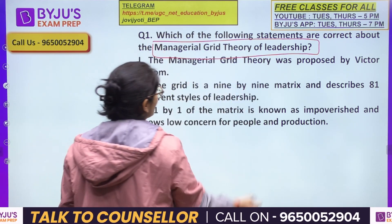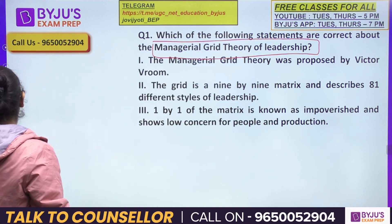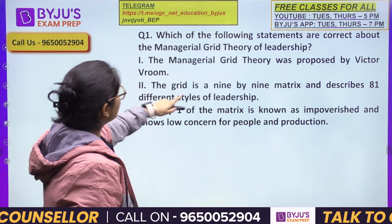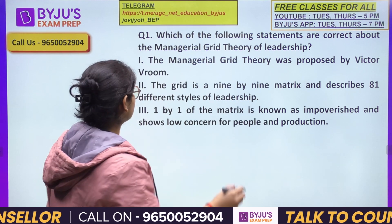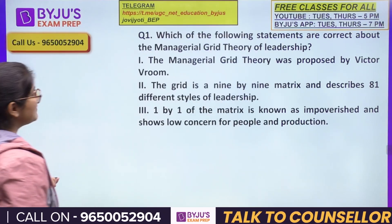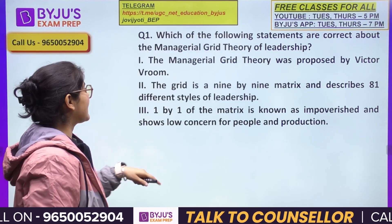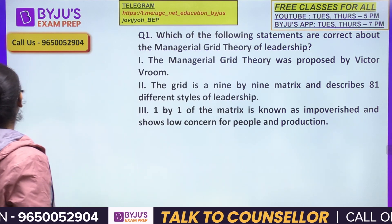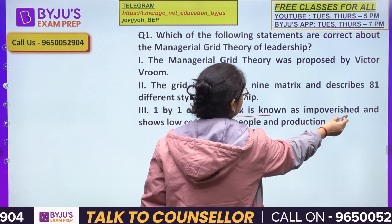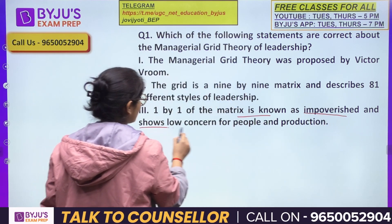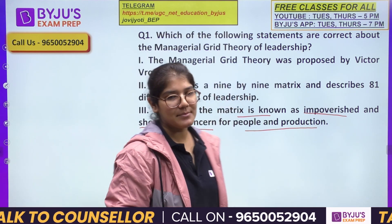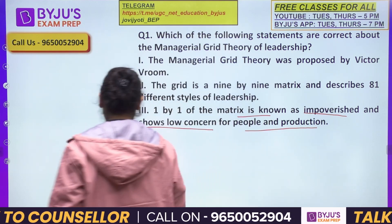Let's see the options. Option one states: the Managerial Grid Theory was proposed by Victor Vroom. Option two: it describes 81 different styles of leadership. Option three: one cell of the matrix is known as 'impoverished' and shows low concern for people and production.